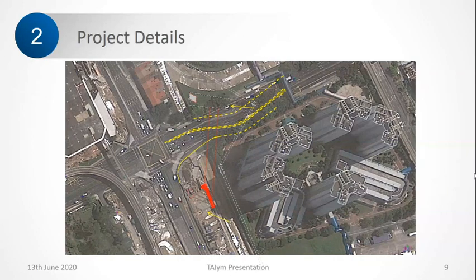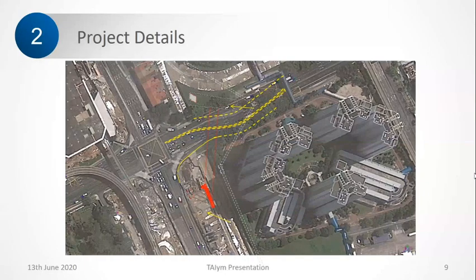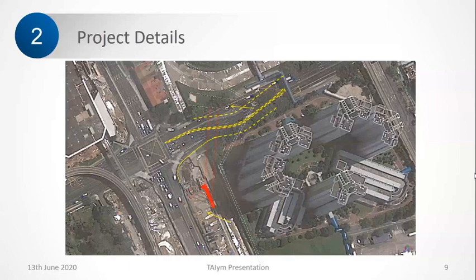The first stage of the problem was to understand the constraints — what are the possible structures in the vicinity? Once this scheme had to go ahead, we designed the frames using the basic principles from the previous two slides: frame stability, roof capacity, and face stability.